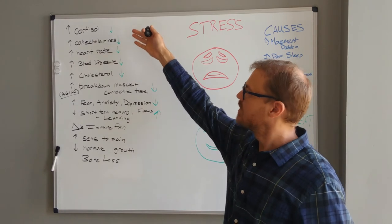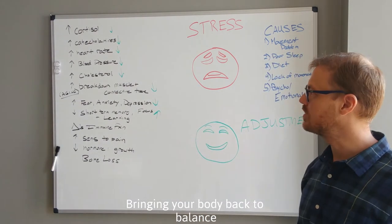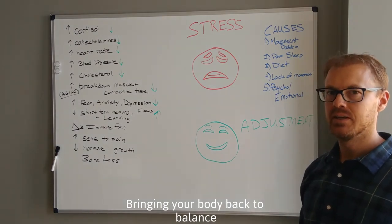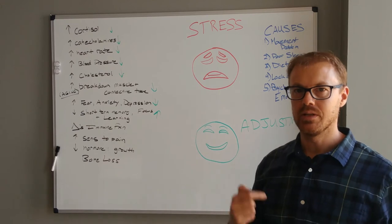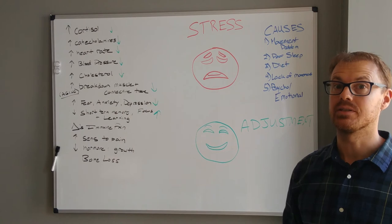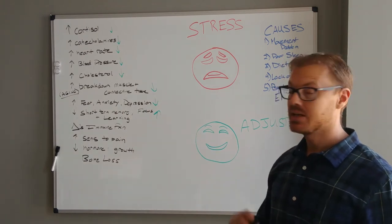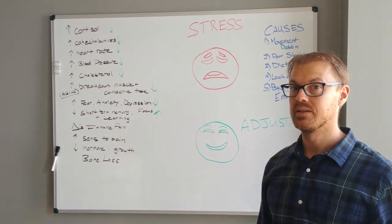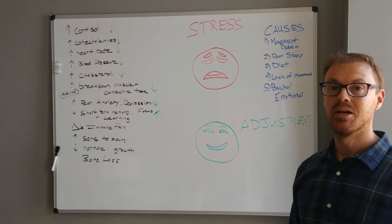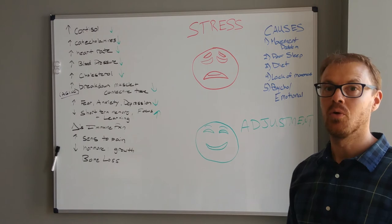Cortisol, those stress hormones start to go down. They've done some research on that. Blood pressure - they've also done a study on that where an upper neck adjustment lowered blood pressure more than two medications did. By controlling your stress response, it can help over time to lower your cholesterol, it can help that breakdown of muscle and connective tissue that makes us look old.